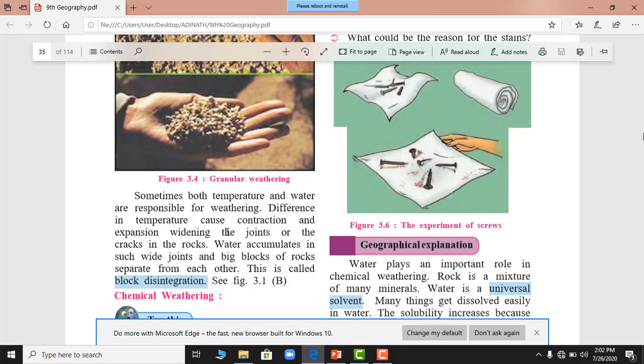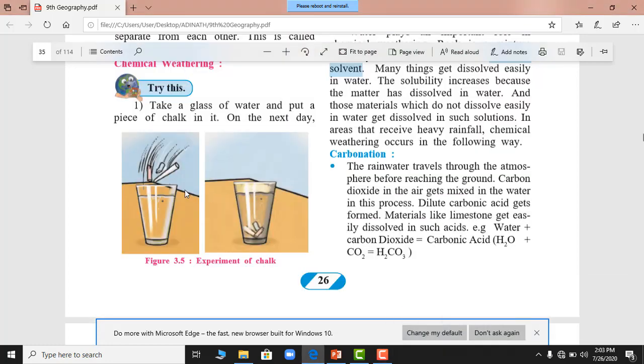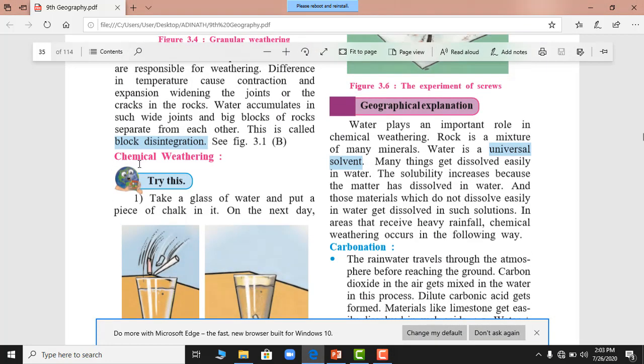And sometime both the temperature and water are responsible for weathering. Difference in the temperature cause contraction and expansion widening the joints or cracks in the rocks. Sometimes heavy temperature and heavy water, rain also causes cracks to develop. So water accumulates in such joints or cracks and big blocks of rocks separate from each other. This is called block disintegration that we already seen in figure 3.1 and now we have already seen the mechanical weathering.